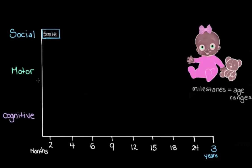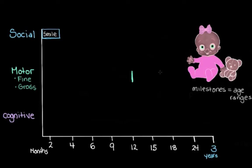What about our motor category? Let's actually split this up into two: fine motor — things like picking up small objects with your pointer finger and thumb — and gross motor, which involves big movements using big muscle groups like our legs, such as walking without any help. The age range we'd normally expect for the motor milestone of walking is somewhere between about 12 months and 16 months.